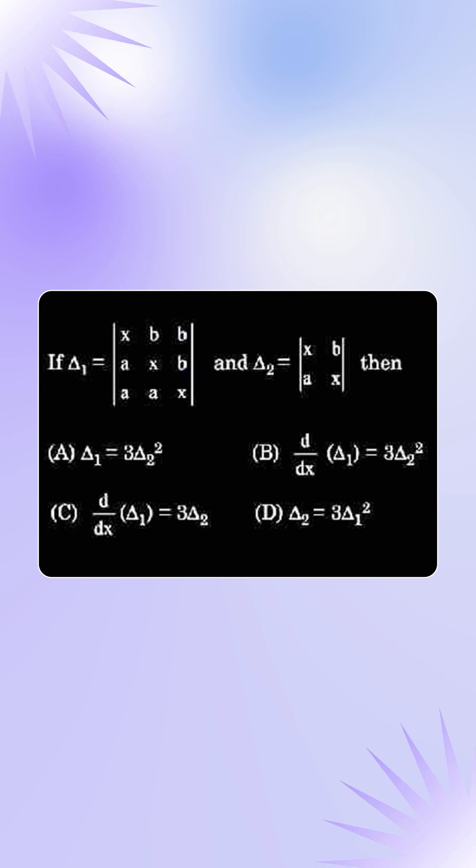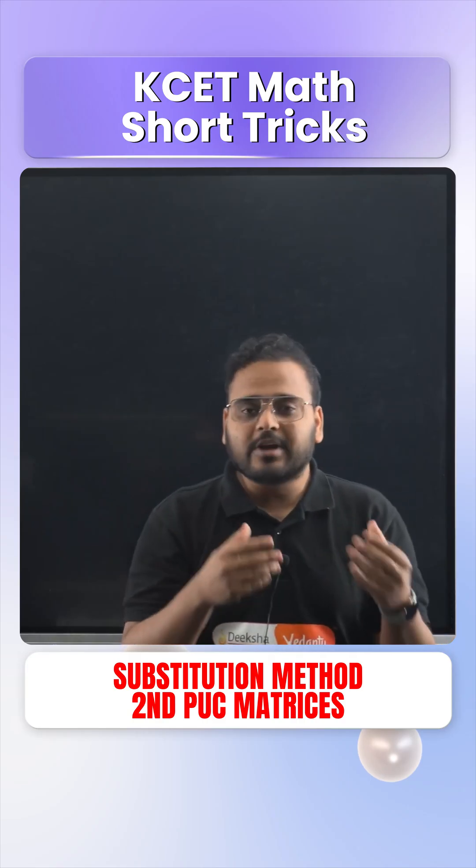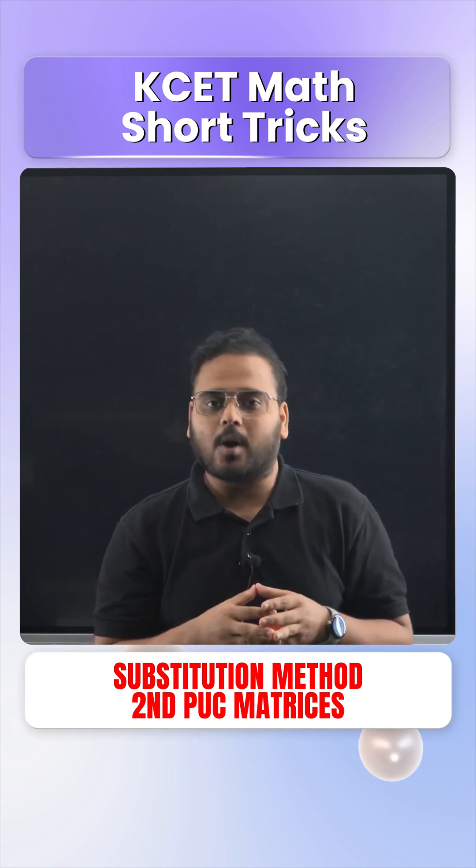The question you see here has two determinants given to you of order 3 cross 3 and 2 cross 2 in terms of the variable A, X and B. We are supposed to reach a result in one of the given options.